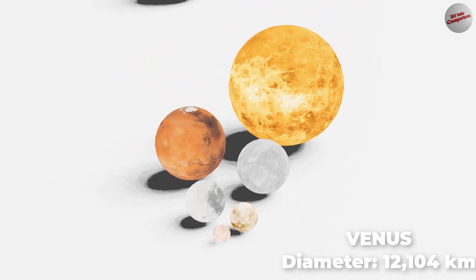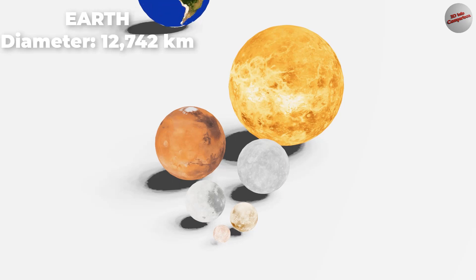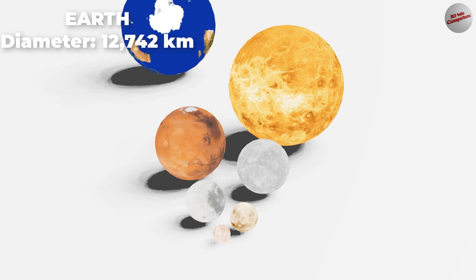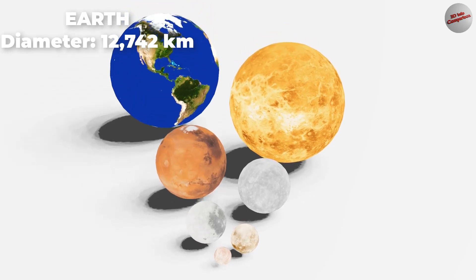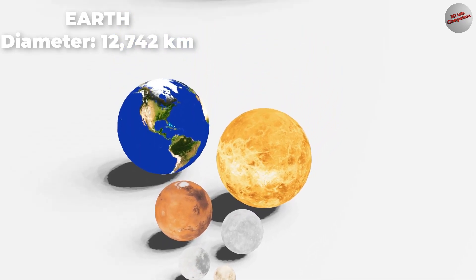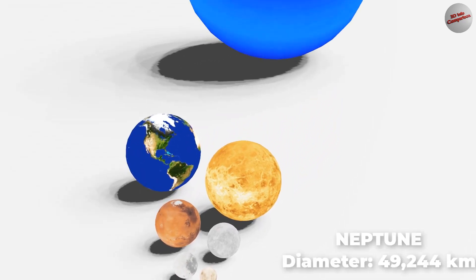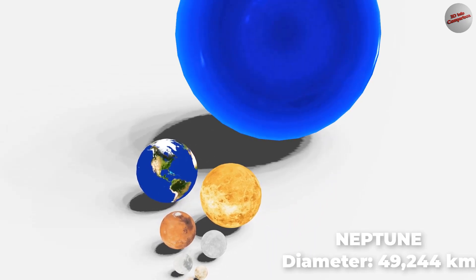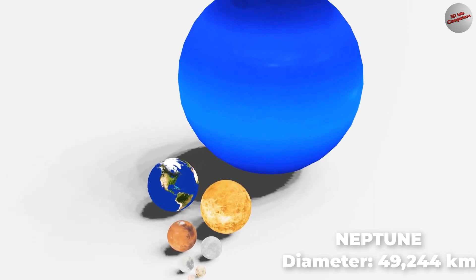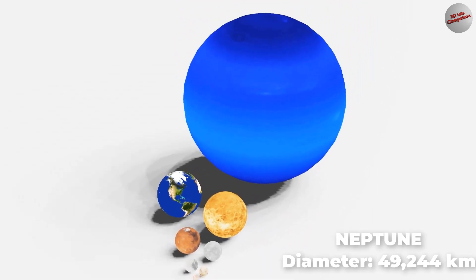Earth is the third planet from the Sun and the only place known in the universe where life has originated and found habitability. Neptune, the distant blue giant, is the eighth planet from the Sun, boasting a turbulent atmosphere, striking blue color, and diverse moons.